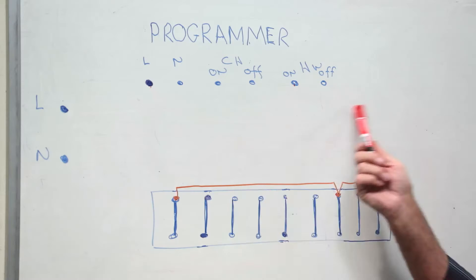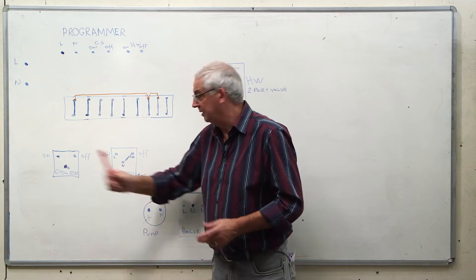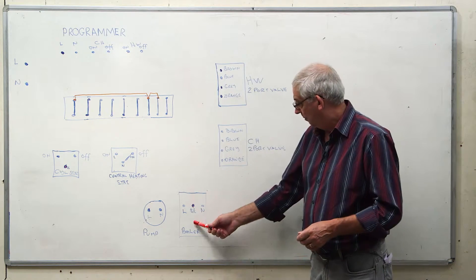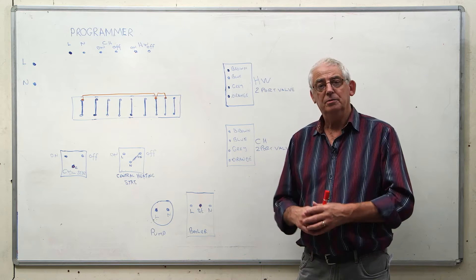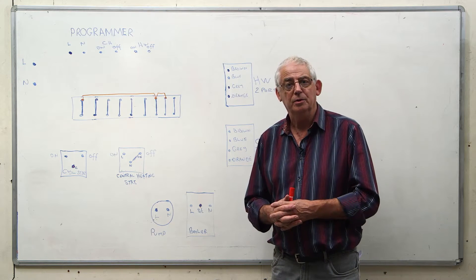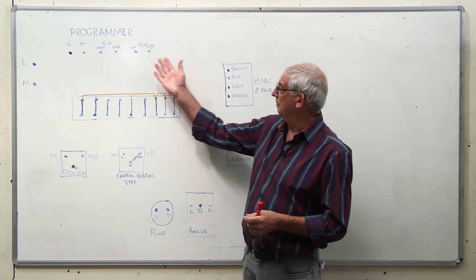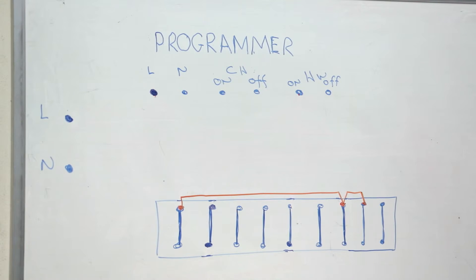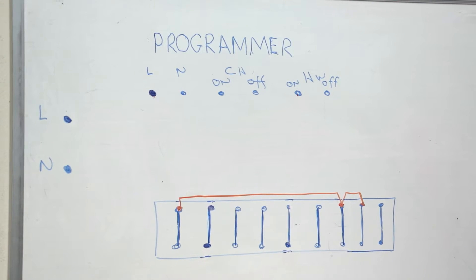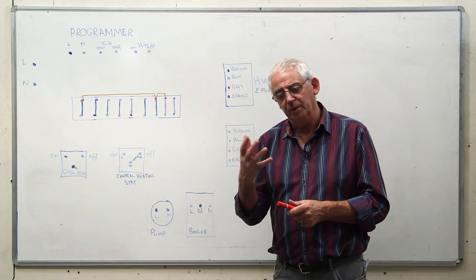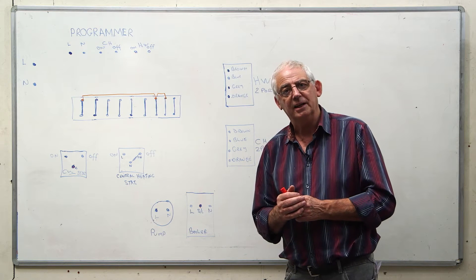Obviously we've got a programmer, we've got a cylinder thermostat, a central heating thermostat, a boiler and a pump. We need to know how to wire it up so that it works properly. I've missed some of the terminals on the programmer. I've only put the ones in that we're going to use plus the off ones, but all programmers look slightly different but the wiring system remains exactly the same.